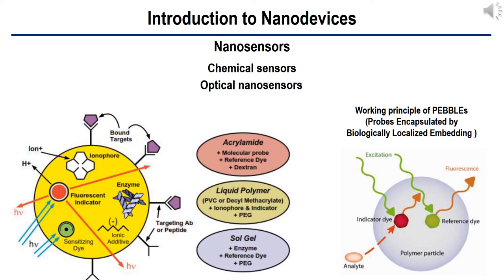The advantages of PEBBLEs from their small sensor size include enabling rapid measurement, diagnosis, and monitoring of diseases, the ability to study early embryo development, and usefulness for quantitative measurements in the intracellular environment.